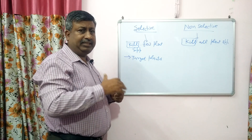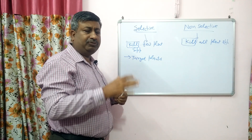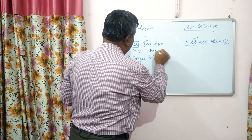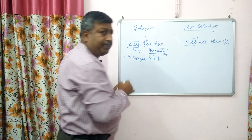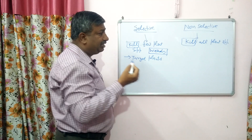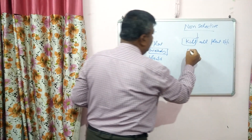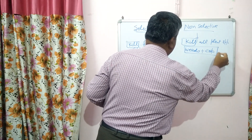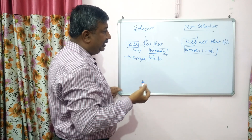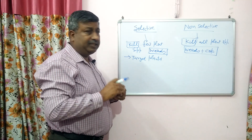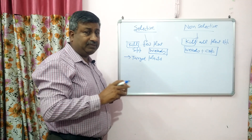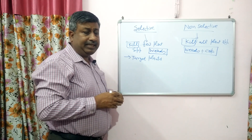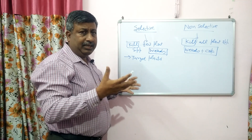In the case of selective herbicides, when they are applied, they kill the weeds and the crop is saved. While in the case of non-selective herbicides, since they kill all plant species, they kill weeds as well as the crop. This is the difference between selective and non-selective herbicides. When non-selective herbicides are sprayed, the crop is also affected — that is why they are applied very carefully. In the case of selective herbicides, they can be sprayed without such careful management.